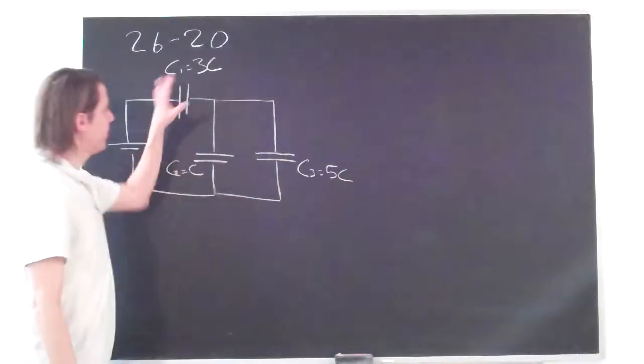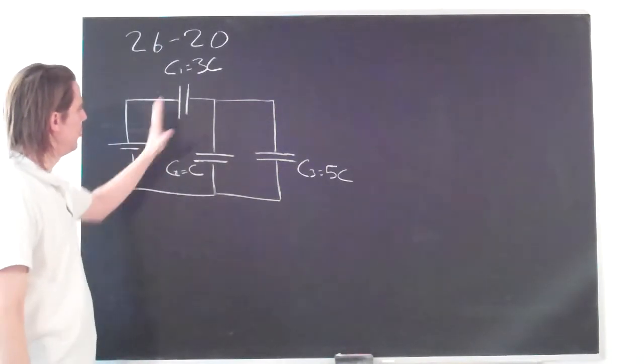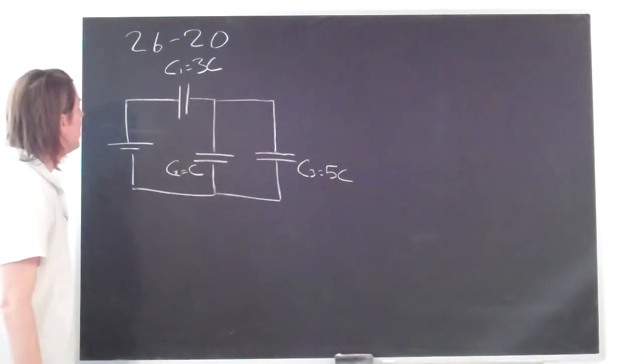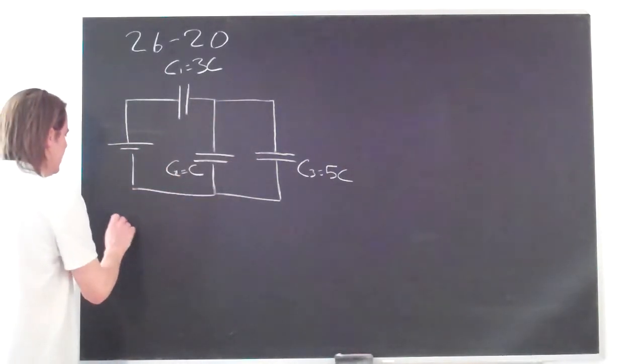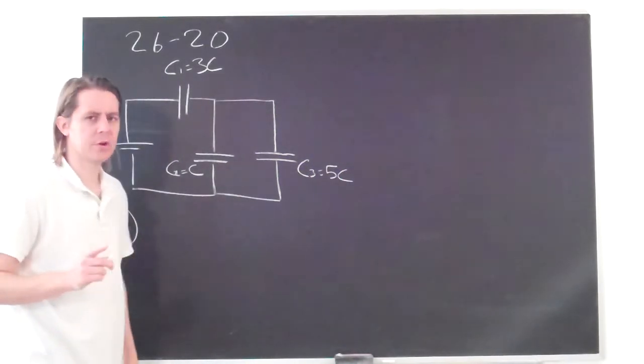So three different capacitors is just telling you that their values are multiples of each other. Capacitors of 1C, 3C, and 5C. So the first question, A, is what is the equivalent capacitance of this entire circuit?